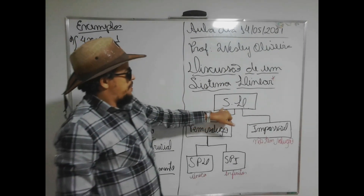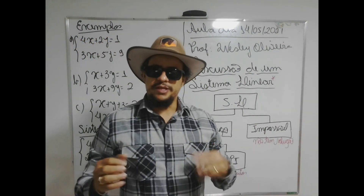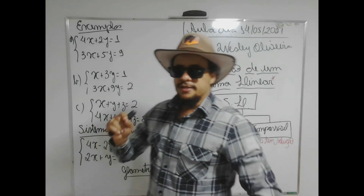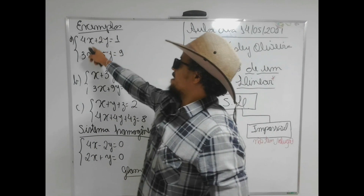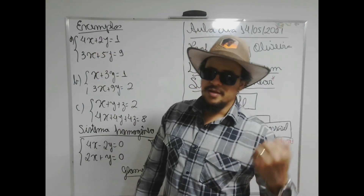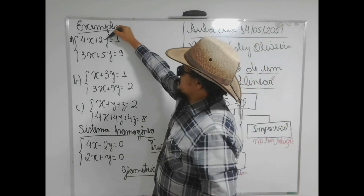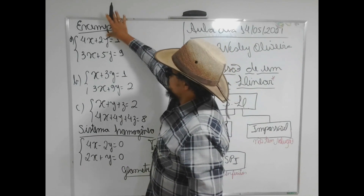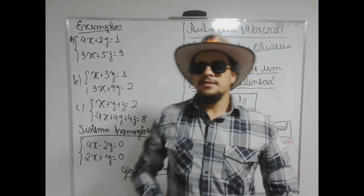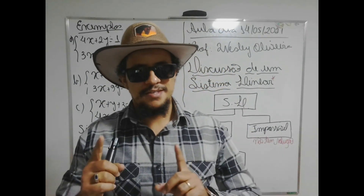Eu pego um sistema linear... aliás, acho que não expliquei para vocês por que aqui a gente chama de sistema linear. Sistema linear é porque todas as variáveis que compõem o objeto de estudo têm grau 1. Então, se aparecer alguma variável elevada ao quadrado, ao cúbico ou alguma coisa assim, deixaria de ser sistema linear. Detalhe simples, mas importante.